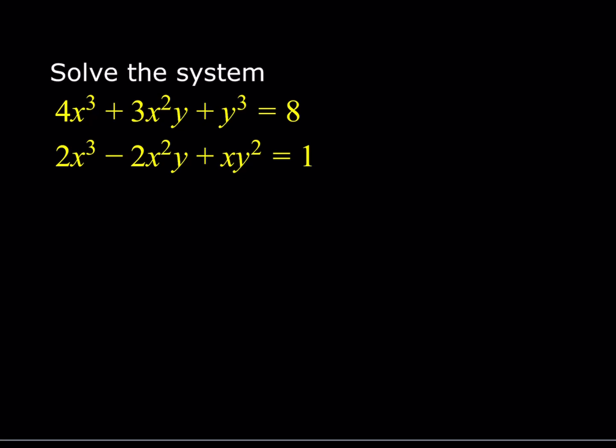So we do have this system: 4x cubed plus 3x squared y plus y cubed is equal to 8, and 2x cubed minus 2x squared y plus xy squared is equal to 1. We're going to solve for x and y. Now, this is a system of equations in two variables, so we should be able to solve it by algebraic means. There's something that makes this system rather special — all of the terms are cubic.